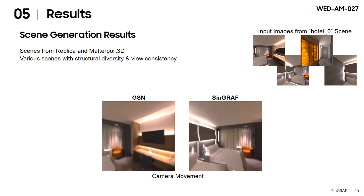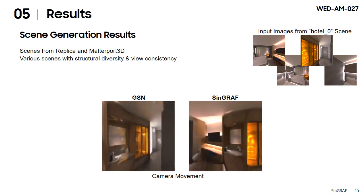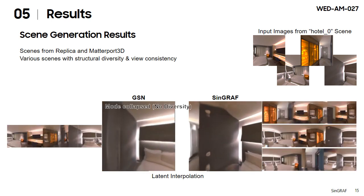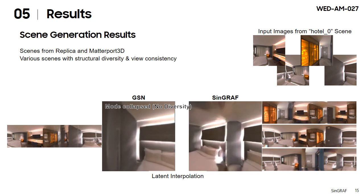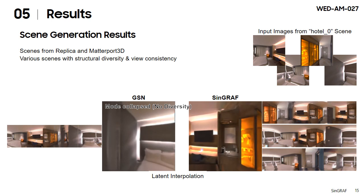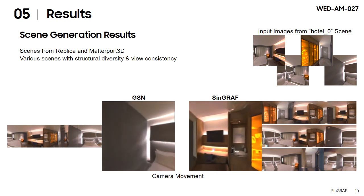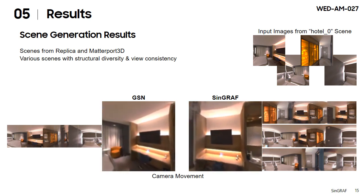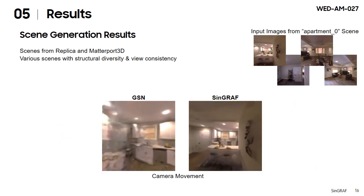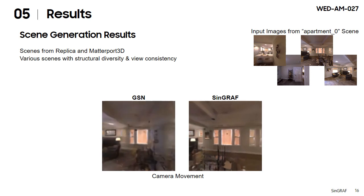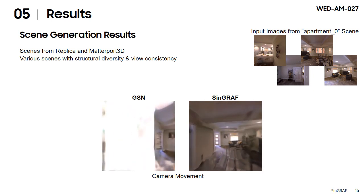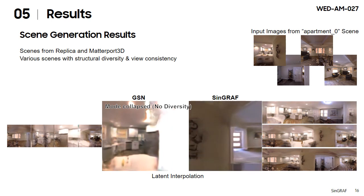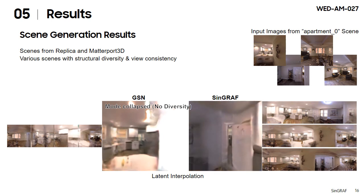We demonstrate our method on various challenging indoor scenes using 100 randomly sampled images for each scene. Scene Graph is able to synthesize a remarkable amount of variation across scenes even when the scene is small and simple, generating plausible images without abrupt content changes by viewpoint. This strong 3D awareness is especially powerful in apartment-scale scenes, capturing structural diversity while preserving the details and general appearance of the scene.